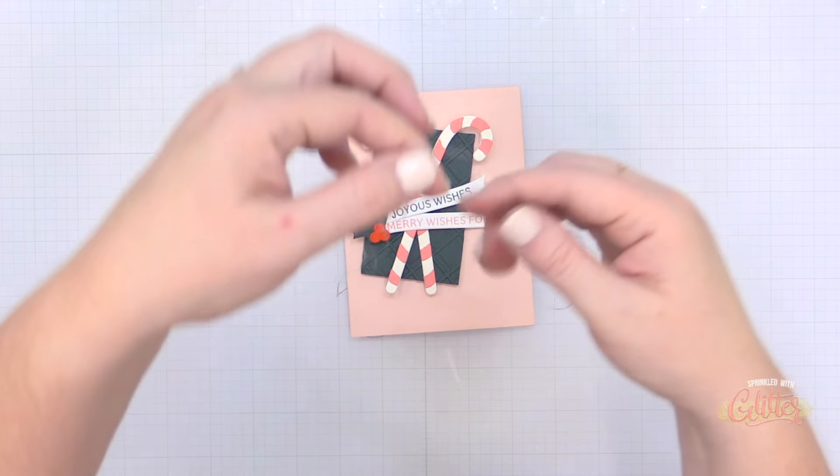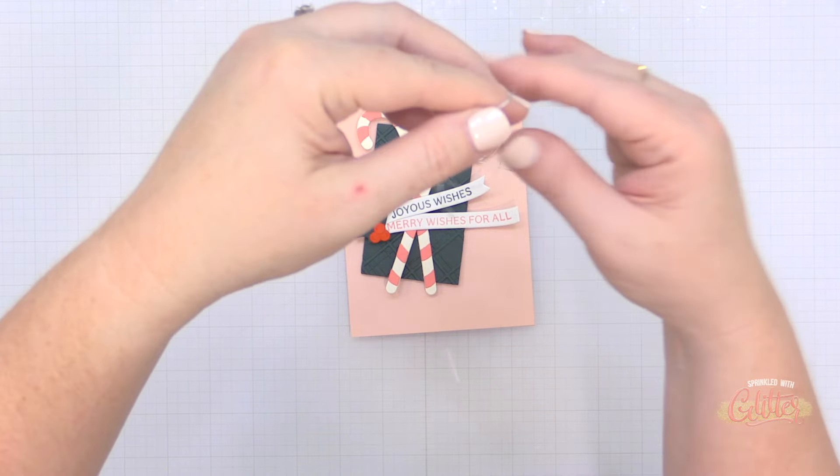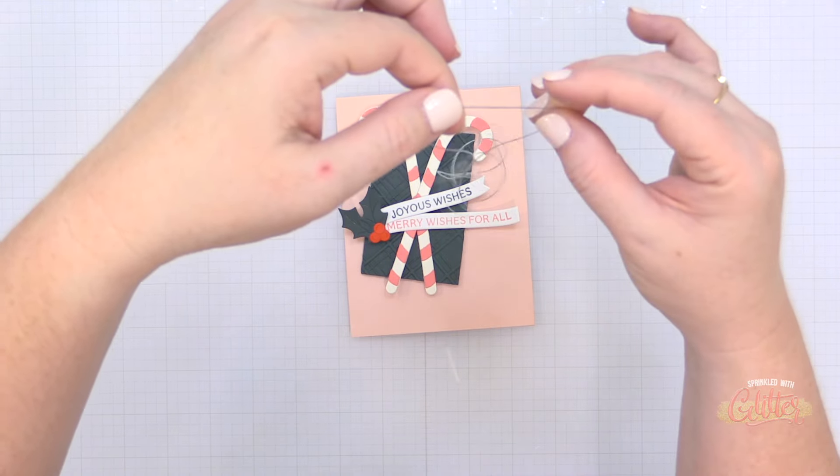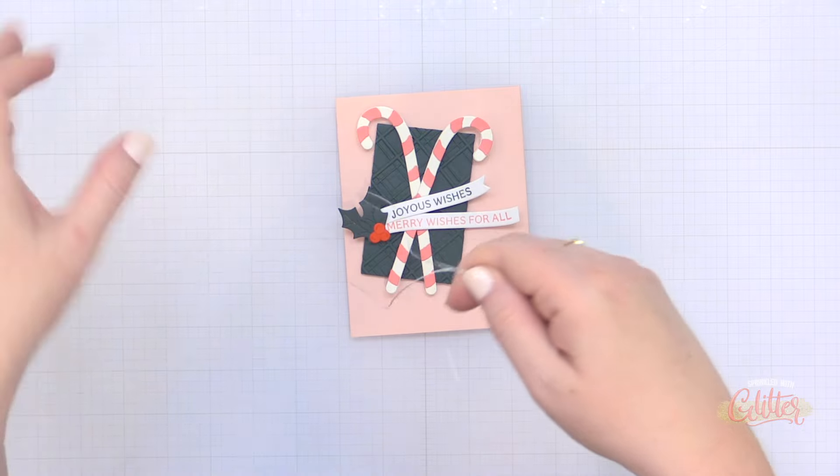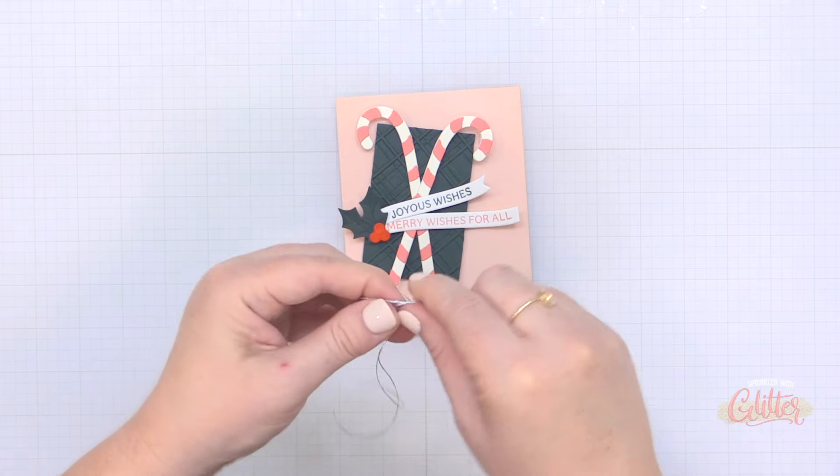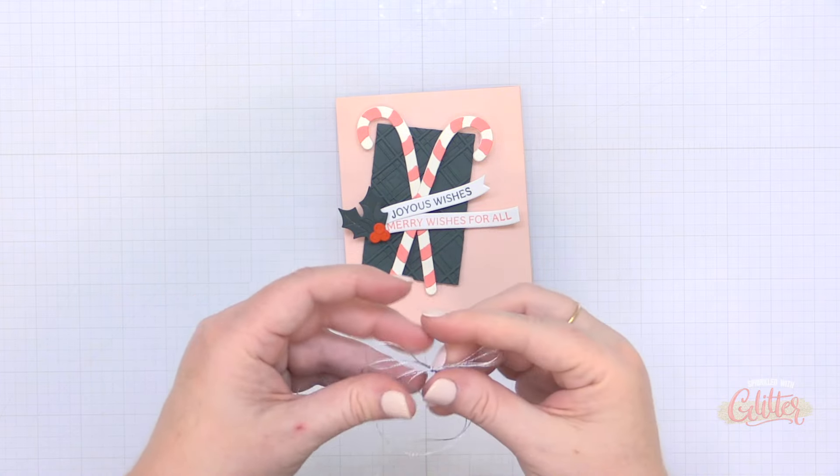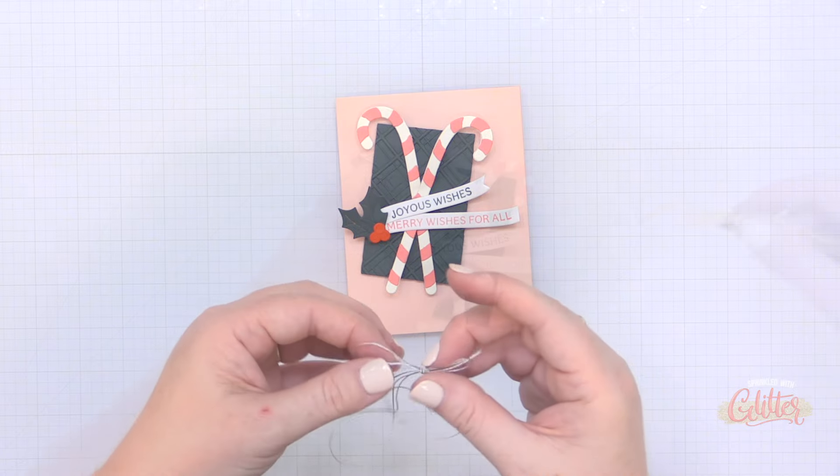And so I am using some of the DMC Diamant Grande thread in the silver color. I have a double layer here, I'm tying it in a big loopy bow and I am going to tuck this between those sentiment banners and the candy cane. I really love this messy thread look on this card.